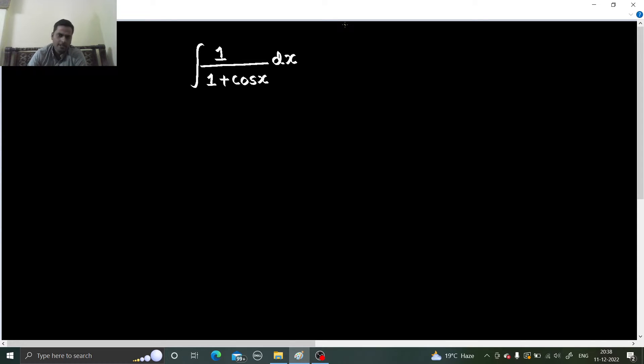Can we use this formula? 1 plus cos 2x we know is 2 cos square x, so 1 plus cos x will become 2 cos square x by 2.